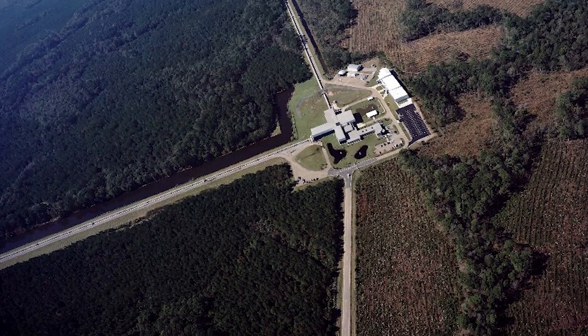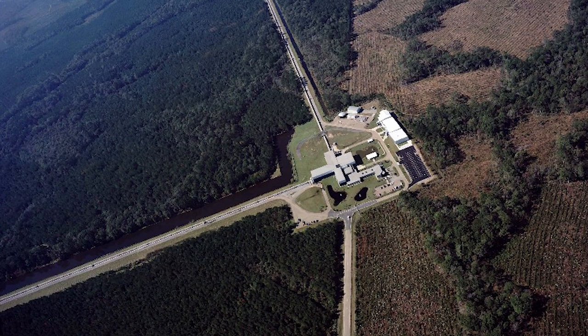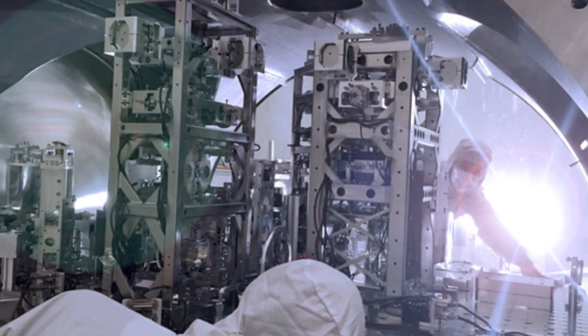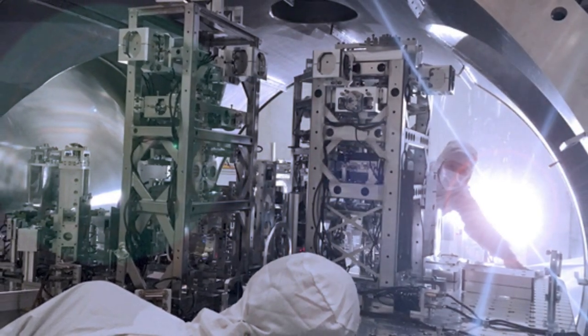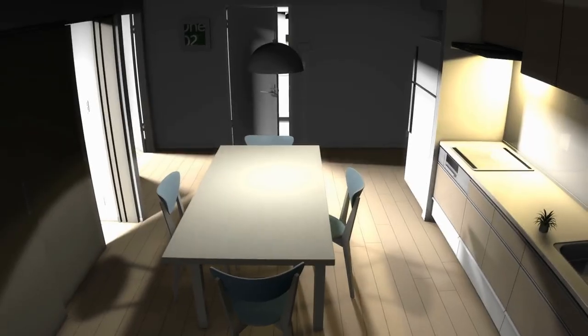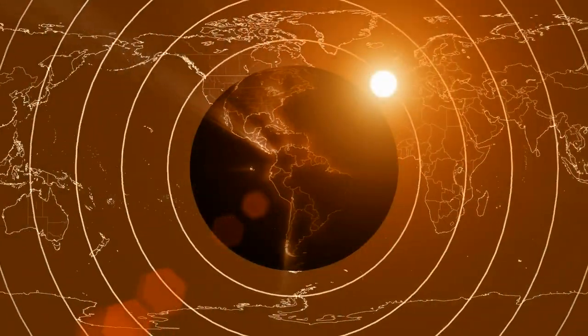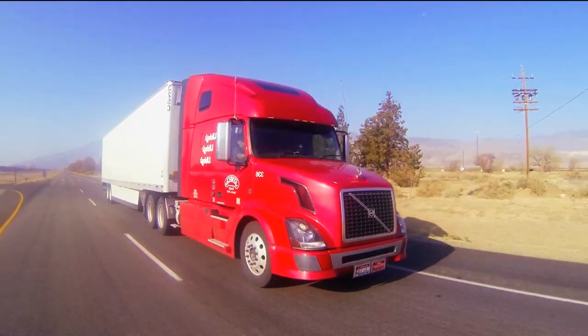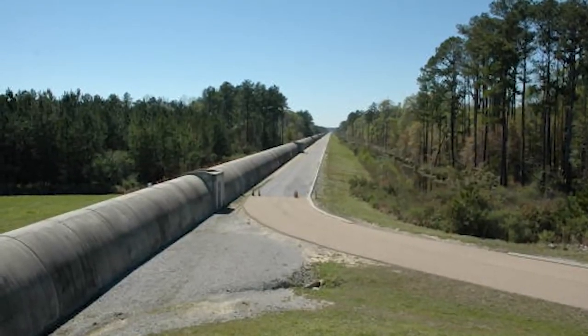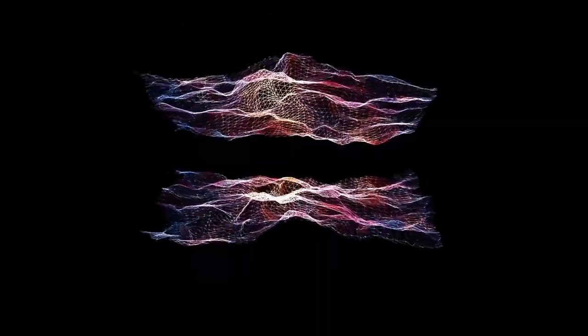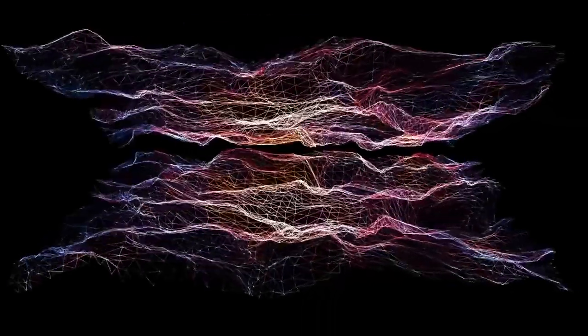And that's because these experiments are on the ground, they're on the surface of the Earth. And these experiments that are trying to measure differences in distances to less than an atomic nucleus, anything that shakes that experiment will contribute a source of noise. So earthquakes around the world, LIGO can detect them. A truck rumbling by on the freeway, LIGO can detect it. Someone walking down the hall and sipping their morning coffee, LIGO can detect it. That's how sensitive these instruments are.